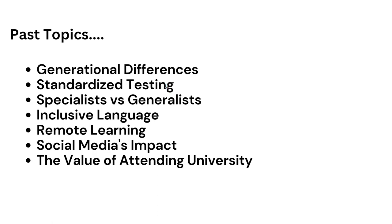Another time, the readings were about standardized testing — one said it's beneficial, the other said it wasn't. Not too long ago, the topic was specialists versus generalists: one reading said that to thrive in modern society you should specialize in one subject, while the other said you should be a generalist and know about a variety of subjects. Other topics have included the value of inclusive language, remote learning, the impact of social media, and even the value of attending university.